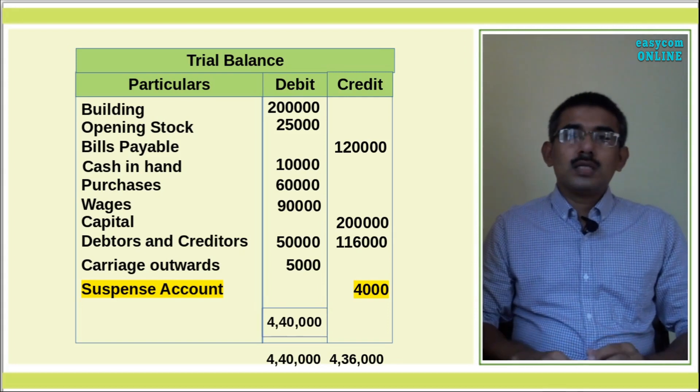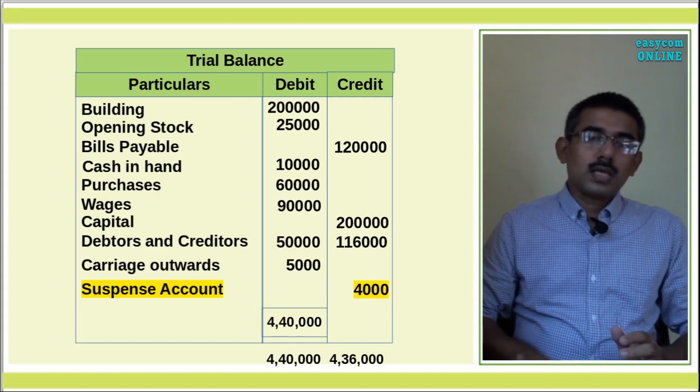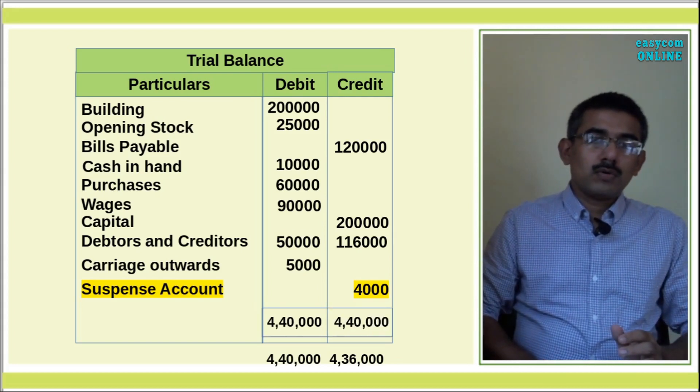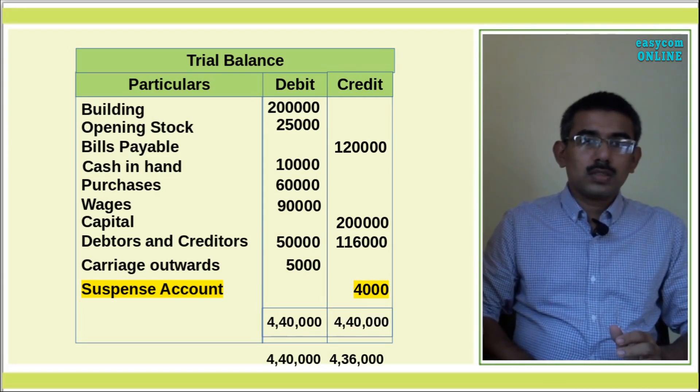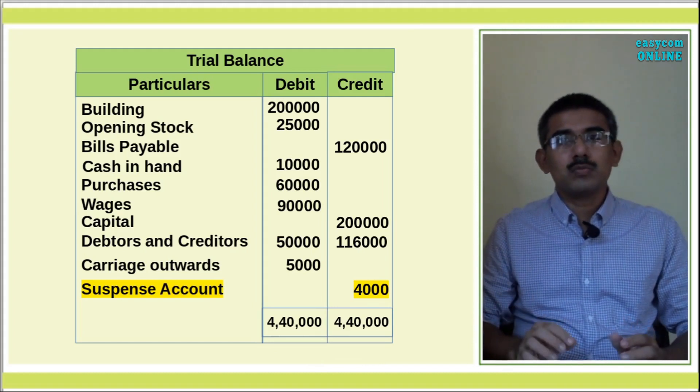When the Suspense Account is related to the trial balance, the debit total is Rs.4,40,000. We then proceed to the final account preparation.